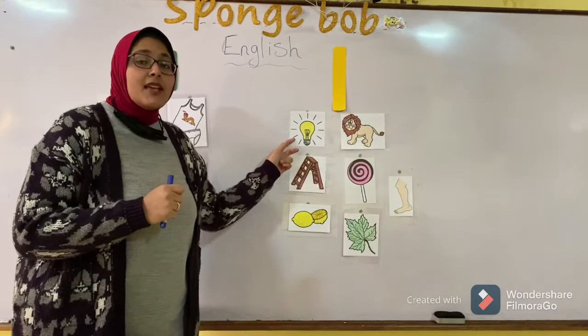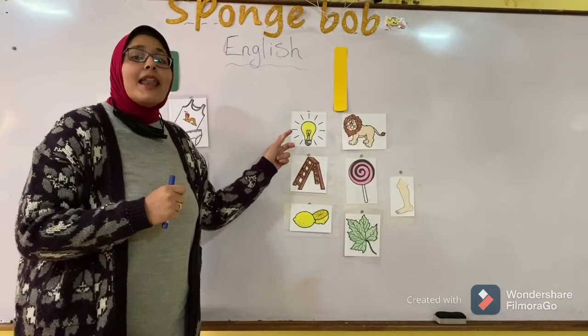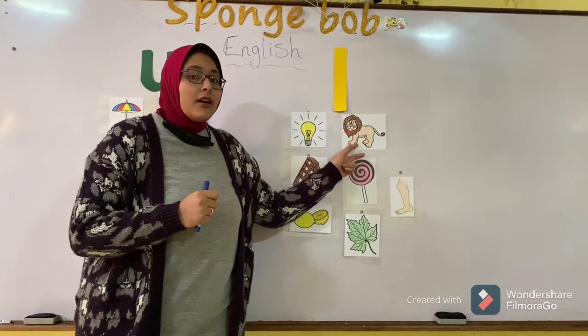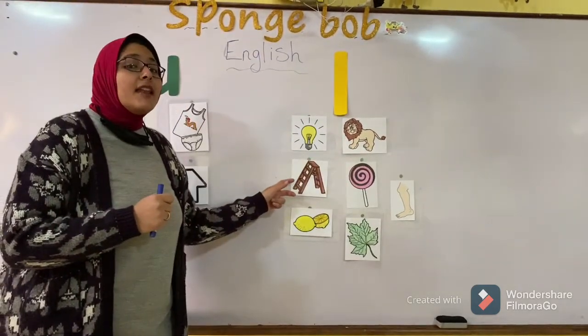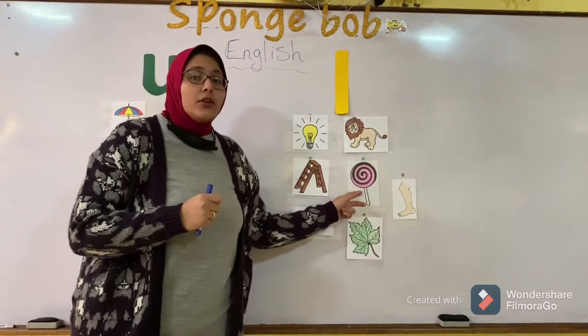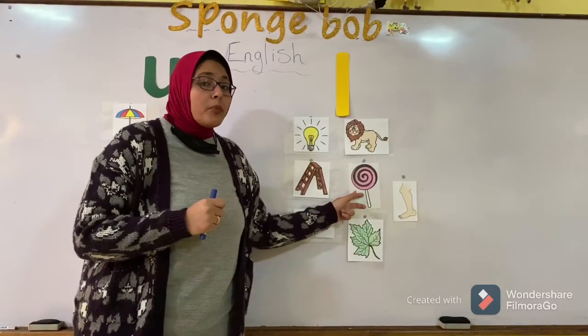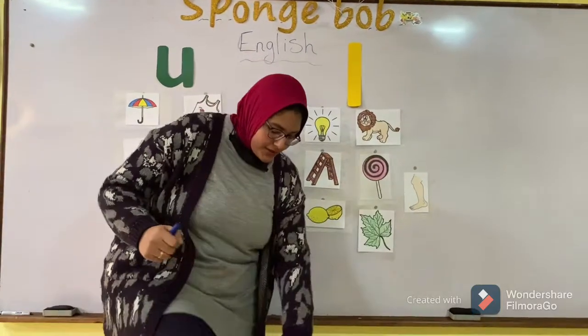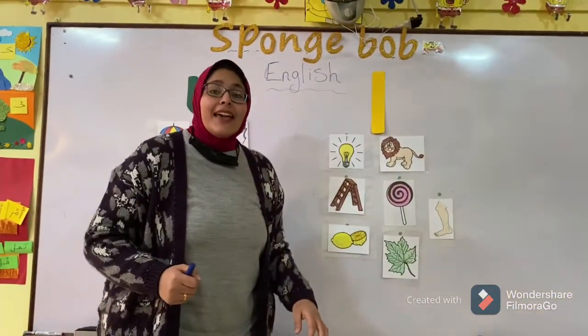And what is this? Lamb, lamb. Line, line. Leather, leather. Lollipop, lollipop. Leg, leg. This part, this part. Leg, leg.